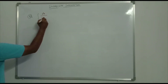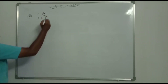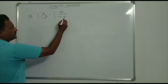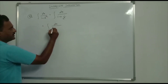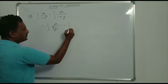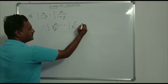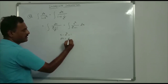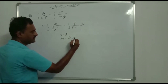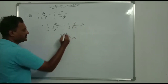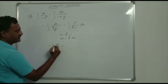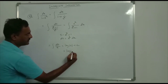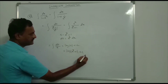Now dx/(1 + e^(-x)). This is written as dx/(1 + 1/eˣ), which simplifies to eˣ dx/(eˣ + 1). Let t = eˣ + 1, so dt = eˣ dx. Substituting: integration of dt/t = ln|t| + c. That is equal to ln|eˣ + 1| + c.